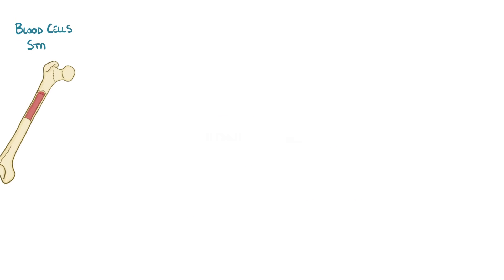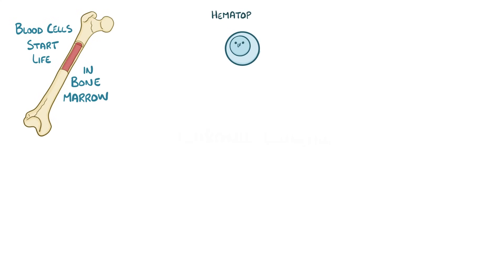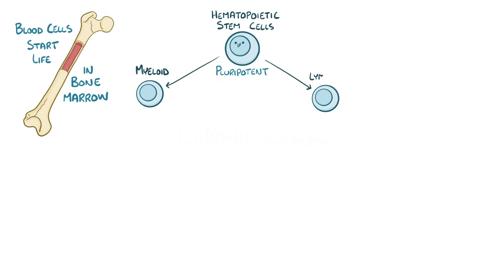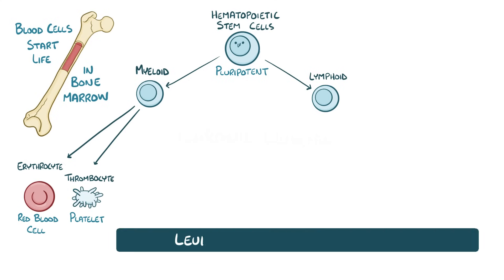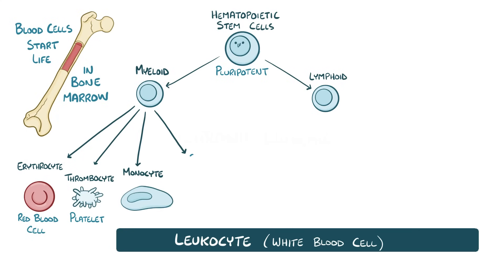Every blood cell starts its life in the bone marrow as a hematopoietic stem cell. Hematopoietic stem cells are pluripotent, meaning that they can give rise to both myeloid or lymphoid blood cells. If a hematopoietic stem cell develops into a myeloid cell, it'll mature into an erythrocyte or a red blood cell, a thrombocyte or a platelet, or a leukocyte, meaning a white blood cell like a monocyte or granulocyte.